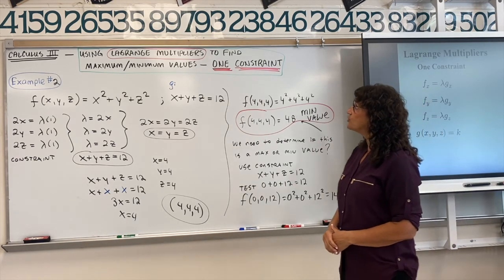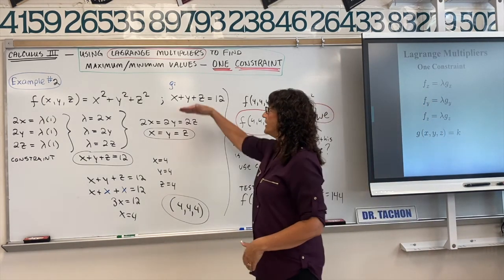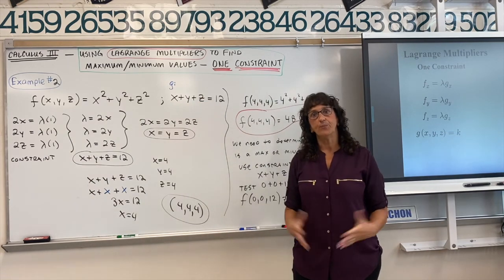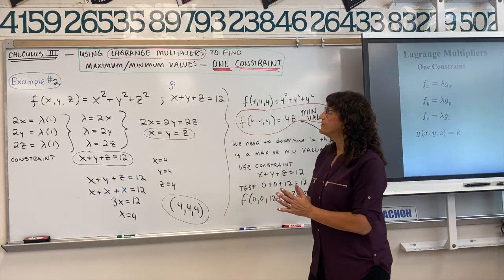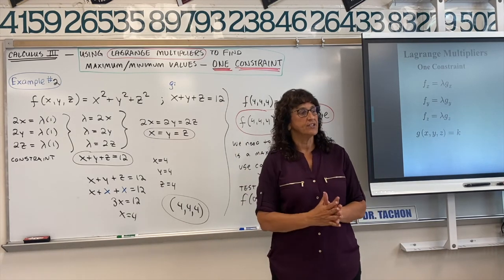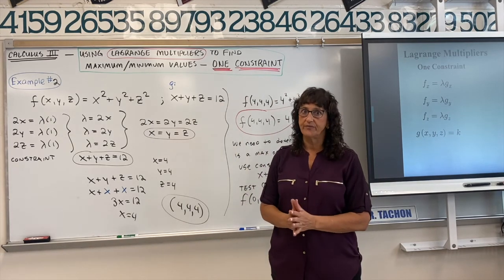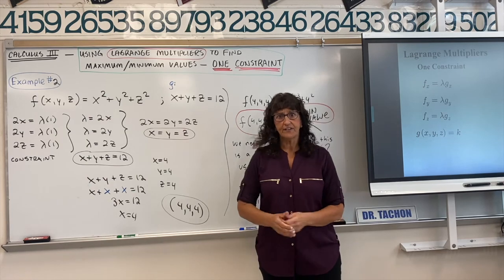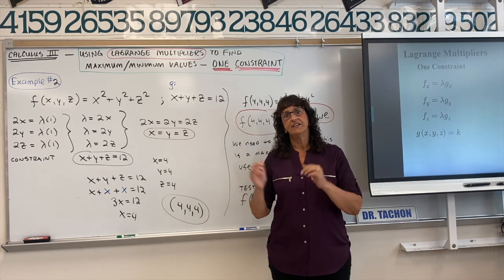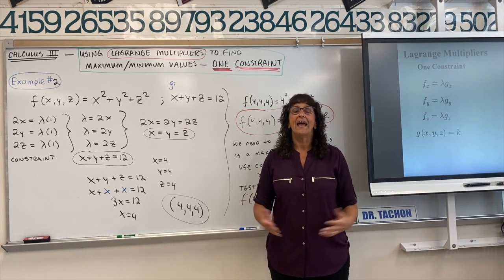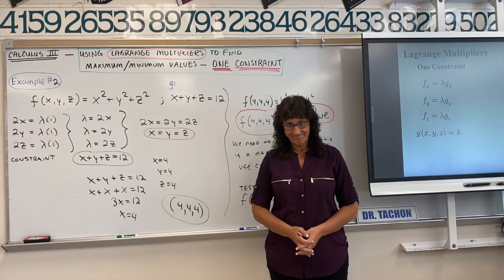This is how Lagrange multipliers work with one constraint — using partial derivatives to set up a system of equations, find critical numbers, and determine extreme values. I hope this helps if you're working through this in your Calc 3 class. If it does, I'd appreciate it if you hit the subscribe button. Thanks for watching — take care, bye-bye.